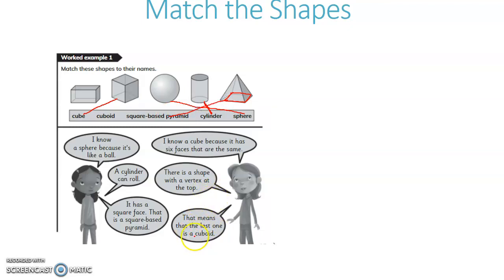That means the last one is a cuboid. So, this is a cuboid. A cuboid has 6 faces, but not all sides are of equal length. A cube has 6 faces and all sides are of equal length.